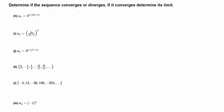Determine if the sequence converges or diverges. If it converges, determine its limit. We find the limit as n goes to infinity of 4 raised to n over 2n plus 1. Since 4 raised to something is an exponential function which is always continuous, we can take this limit to the exponent. So this limit is the same as 4 raised to the limit of n over 2n plus 1 as n goes to infinity.